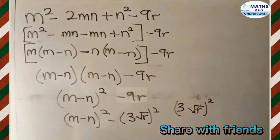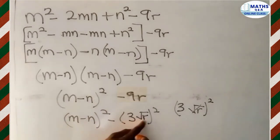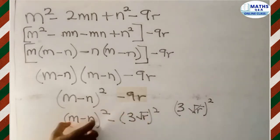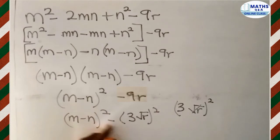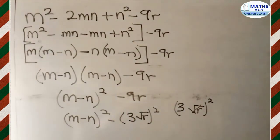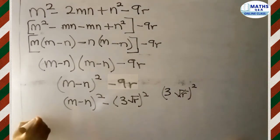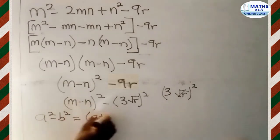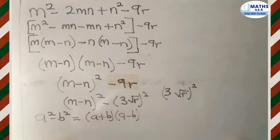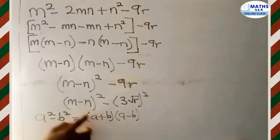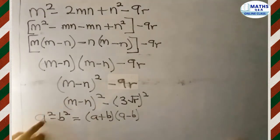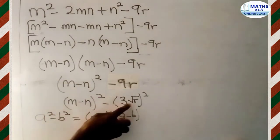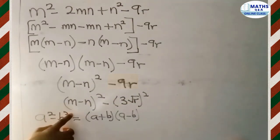Now we have (M minus N) all squared and (3 root R) all squared — two different terms both having squares and being subtracted. So we have a difference of two squares. We apply the difference of two squares formula, which states that A squared minus B squared equals (A plus B) times (A minus B). Here, A is replaced with (M minus N) and B is replaced with 3 root R.